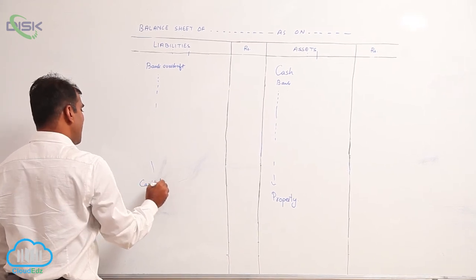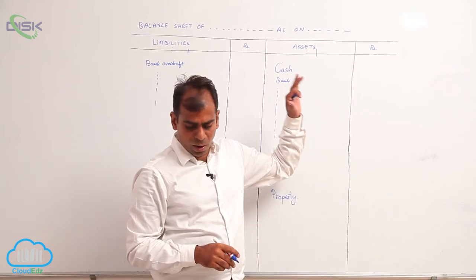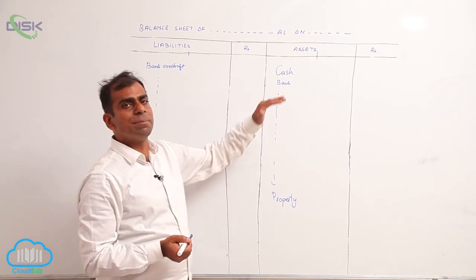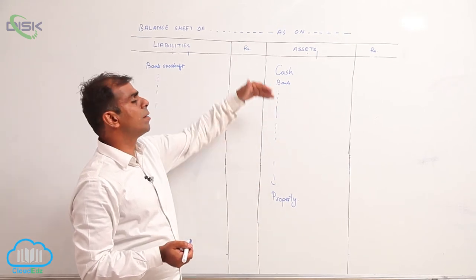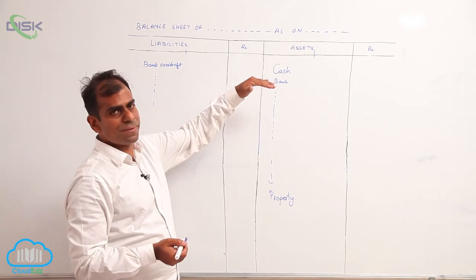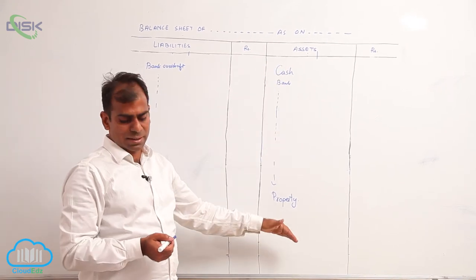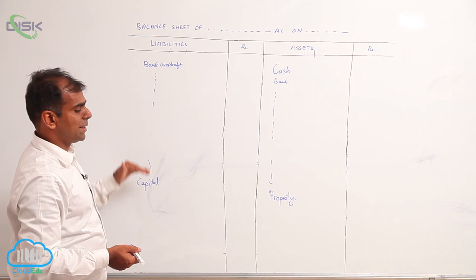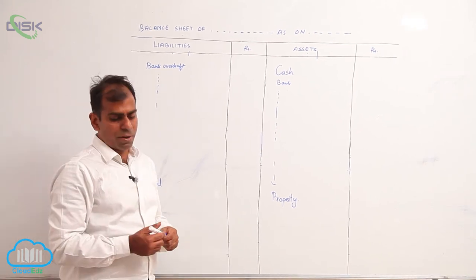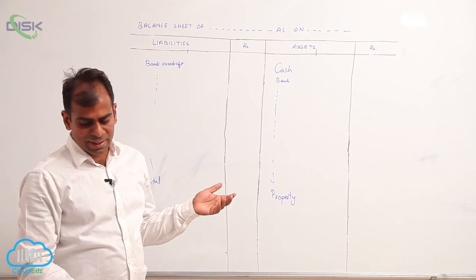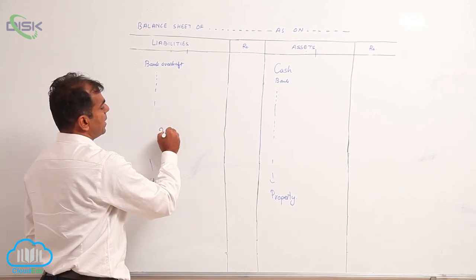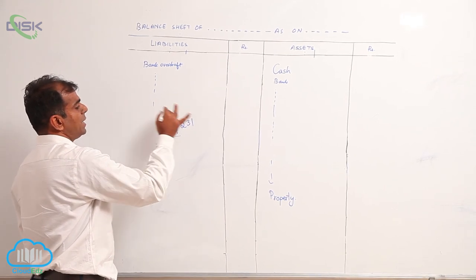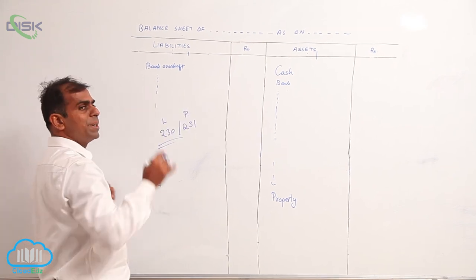On the liability side under order of liquidity, we start with bank overdraft and end with capital as the last item. Exactly opposite is the order of permanency — goodwill or properties, the most fixed assets, come on top and cash comes towards the end. Similarly, capital comes on top and other items follow. The formats for order of liquidity and order of permanency are given on pages 230 and 231 respectively.